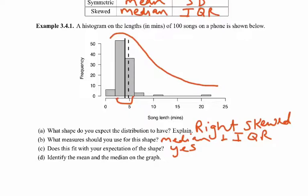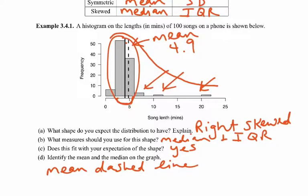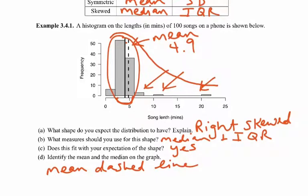Because the graph is right-skewed, the longer songs — those at 10 or 20 minutes — are going to pull up the average, pulling up the mean. So the mean is going to be the higher of the two numbers, which is the dashed line. I can tell you from the data that the mean is 4.9 minutes. The median is where 50% of the data falls below and 50% above.